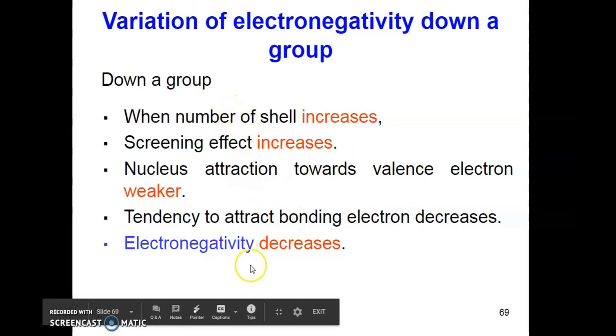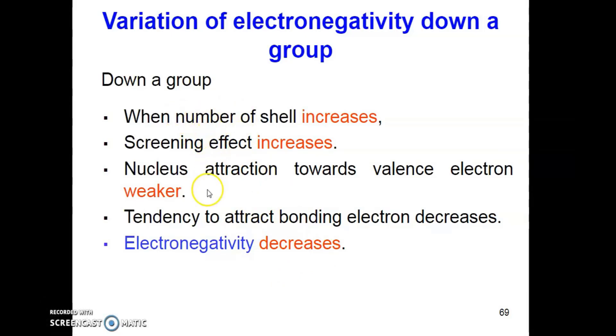Now, down the group, we see there is decrease in electronegativity. That is because down the group, the bonding pair of electron is held increasingly further away from the nucleus. This is because number of shells increase and so is the distance of the valence shell and nucleus. Therefore, screening effect increase. Tendency to attract bonding electron decrease when we go down the group. Hence, electronegativity decrease when we go down the group.